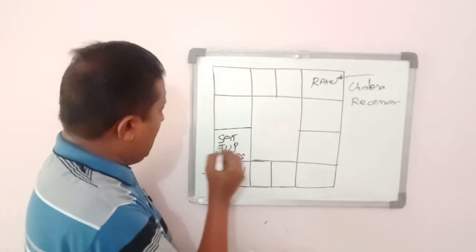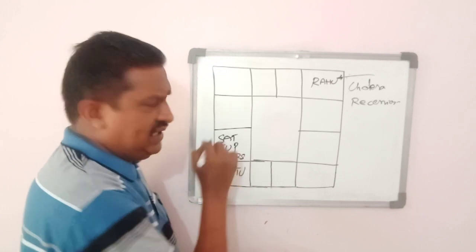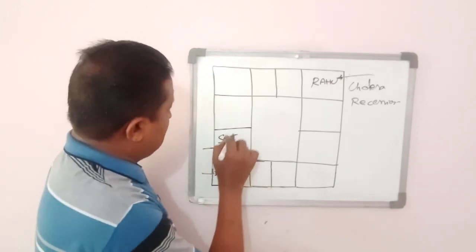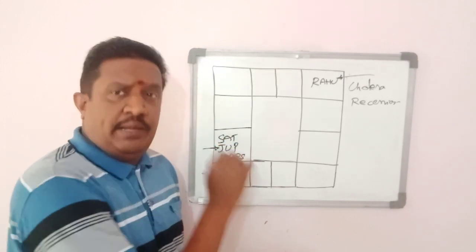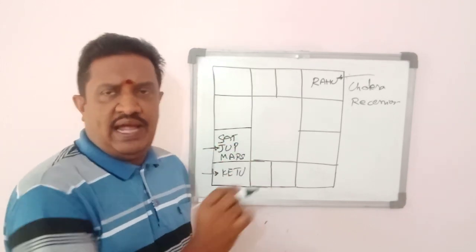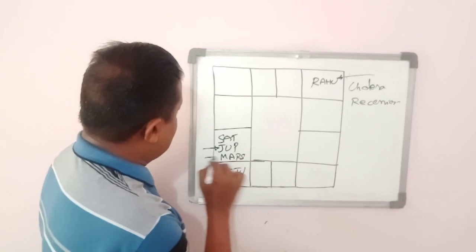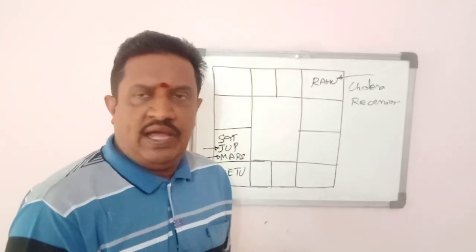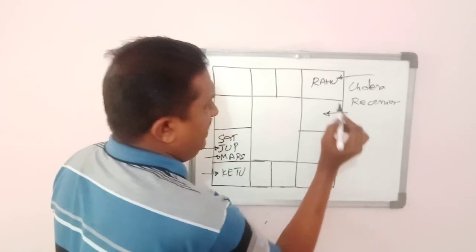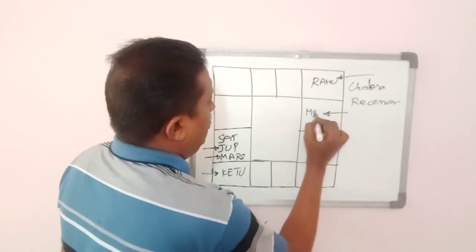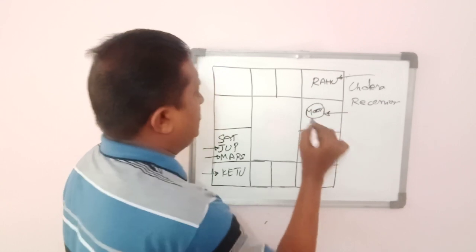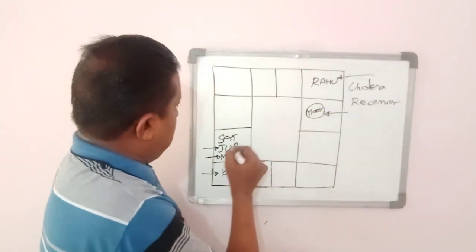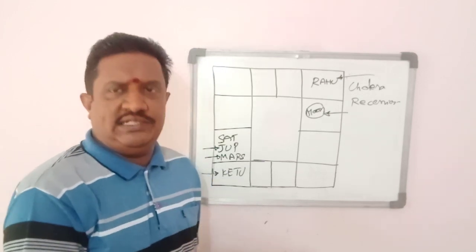Added to that, we have Jupiter conjoining Saturn — Jupiter is the Javakaraka — and he is conjoining Saturn in Capricorn while being debilitated. Adding fuel to that, Mars is exalted in Capricorn. As per India's chart, India's Rashi is Karkataka Rashi, and this combination is happening in the 7th house of the Indian chart.